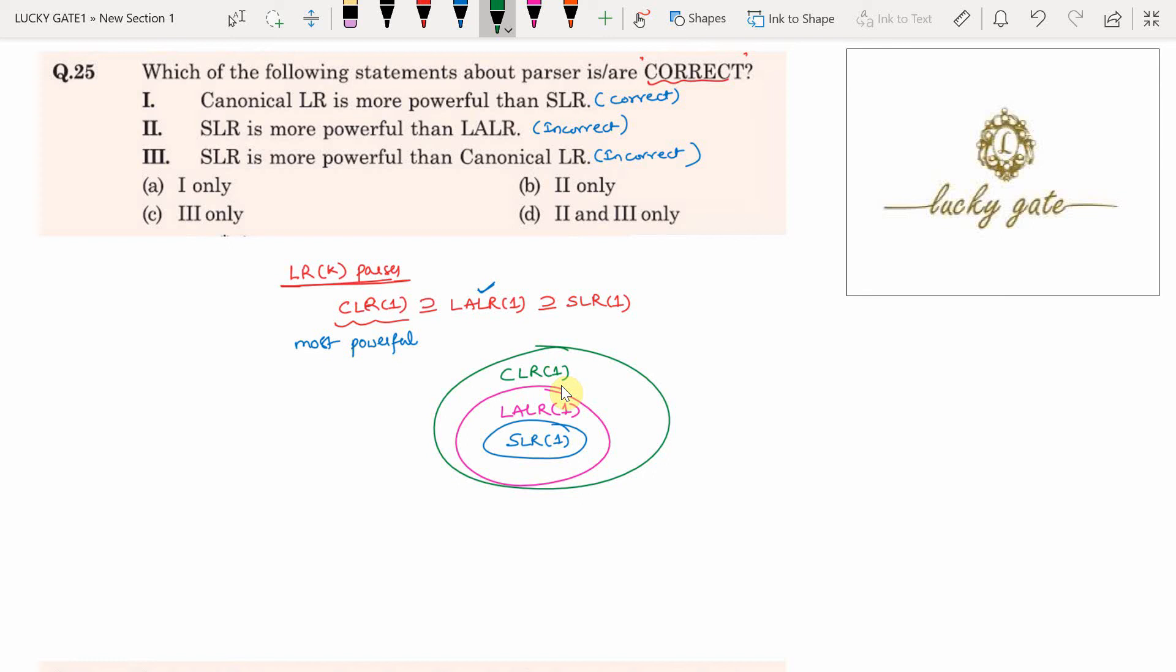So option A is the correct answer for this question, because canonical LR is more powerful than SLR is the only correct statement. The answer is option A.